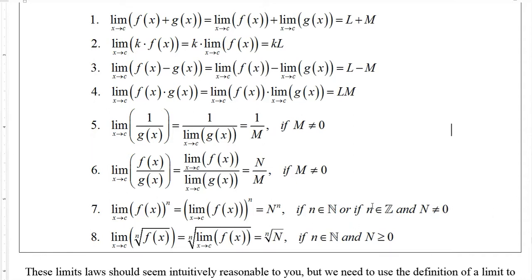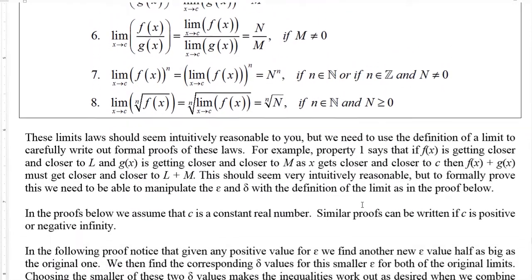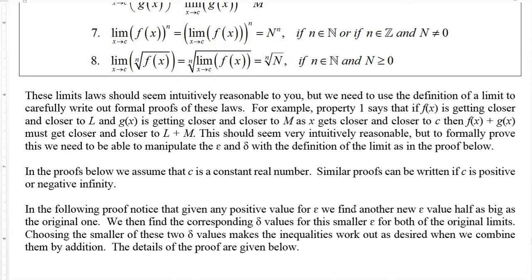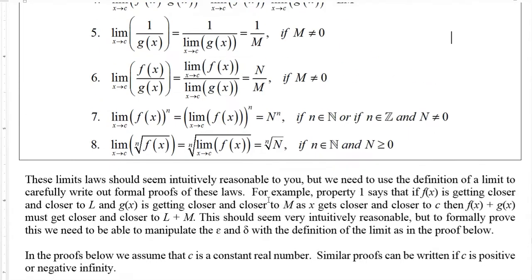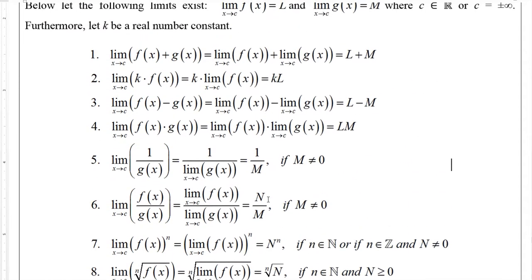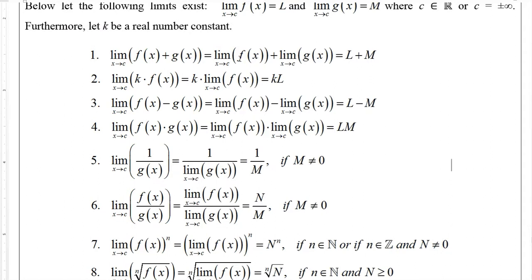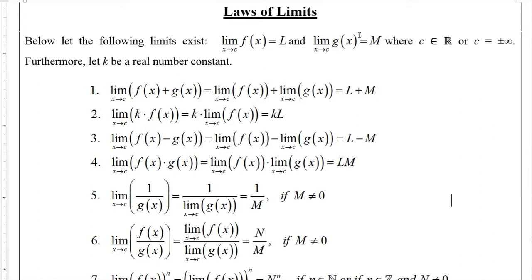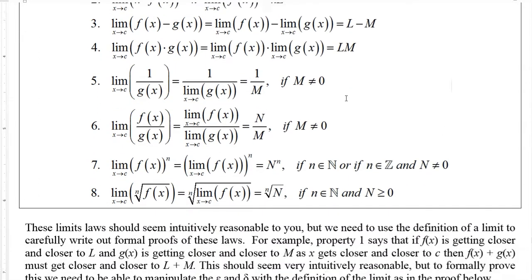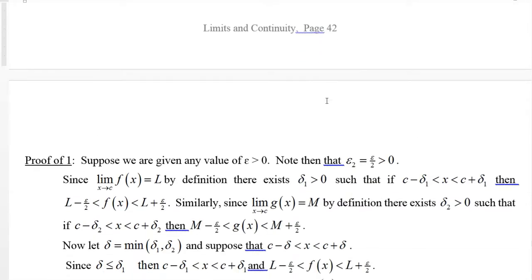Those are our basic properties and they should seem fairly reasonable. To prove them, we need to get our hands on the deltas and epsilons and manipulate them to make the proofs work. Essentially, we're going to show that given any epsilon there is a delta satisfying the conditions in the definition of the limit. Let's show the proof.